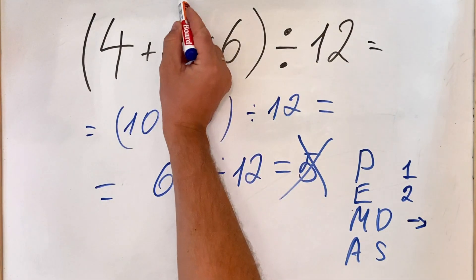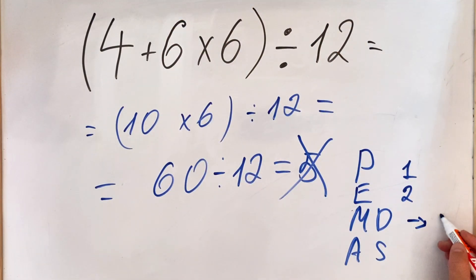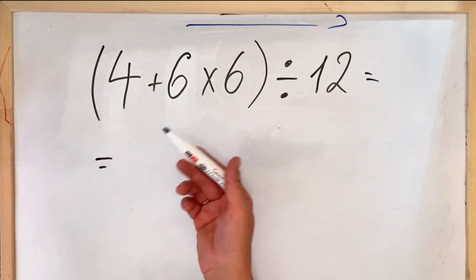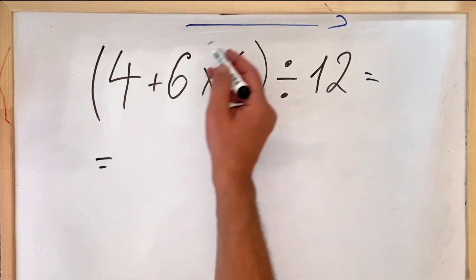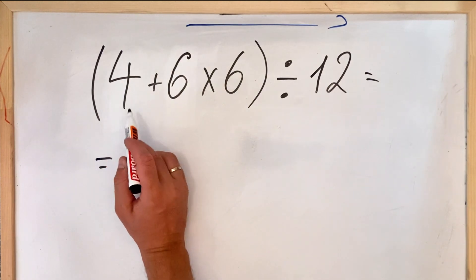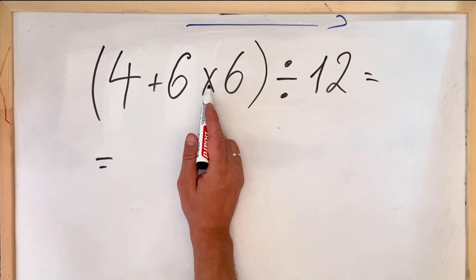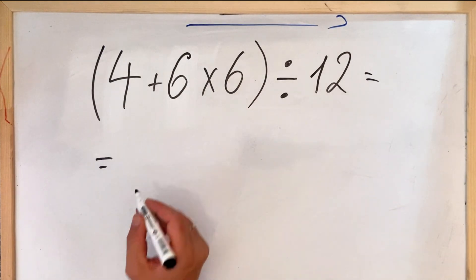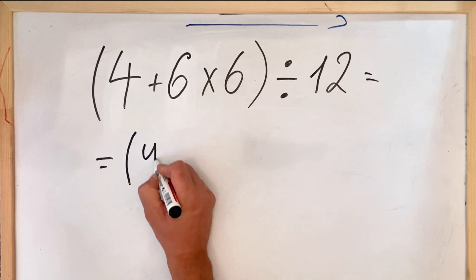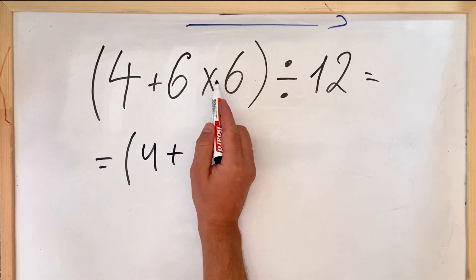And only then we have the addition and subtraction. In our case what we should do first is the things in parentheses. So first we need to calculate 4 plus 6 multiply by 6, but of course we have to do multiplication first as you saw in the rule, so we get 4 plus 6 multiplied by 6 is 36 divided by 12.